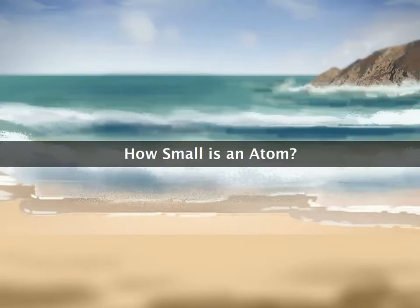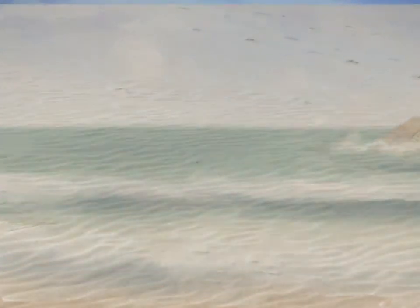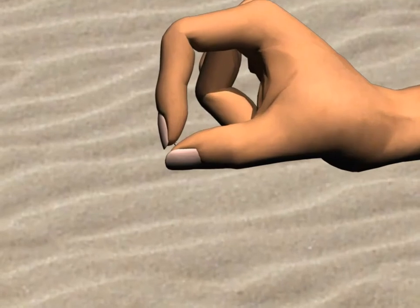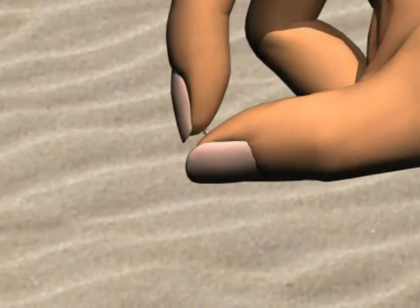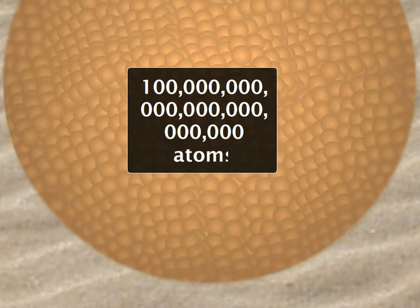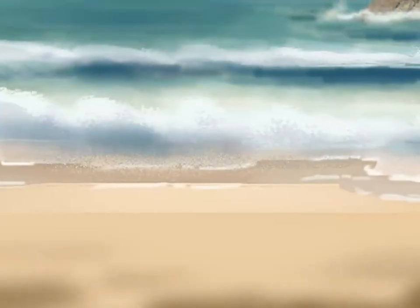How small is an atom? Atoms are smaller than anything you could compare them with. There are 10 to the power of 23 atoms in each grain of sand. So can you imagine how many atoms there might be on this beach?